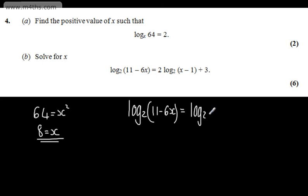I'll have log to the base 2 of the quantity x minus 1 all squared plus the 3. I'm now going to subtract log to the base 2 of x minus 1 all squared from both sides.